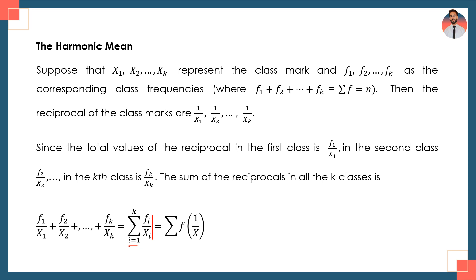You can write fi/xi for i from 1 to k, or equivalently write it as f multiplied by 1/x. This way you have all the reciprocals weighted by their corresponding frequencies.